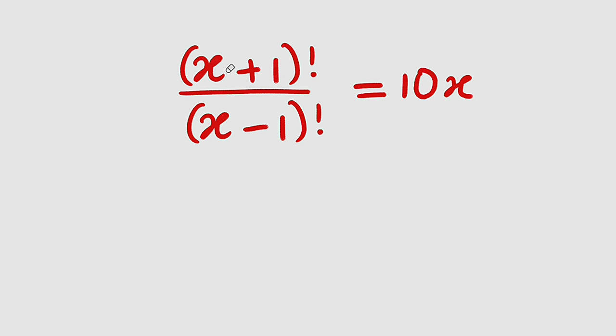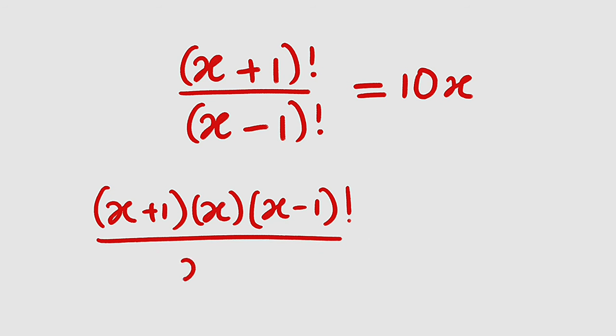Therefore we can rewrite (x+1)! as x+1 then multiply by the next digit which is going to be x+1 minus 1, which is just x, multiplied by the next one which is x-1 factorial. We can stop here because we have (x-1)! down below.